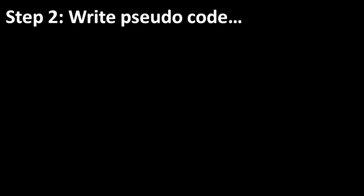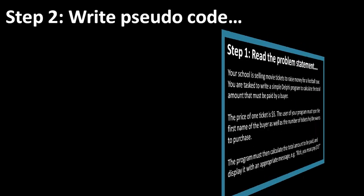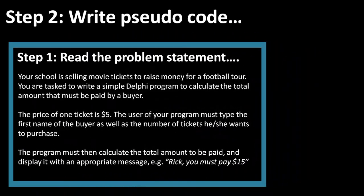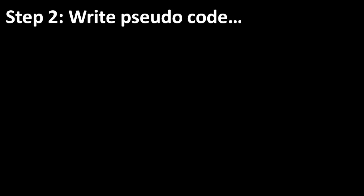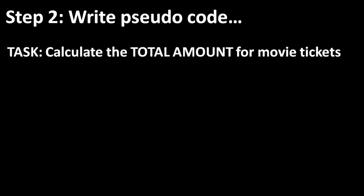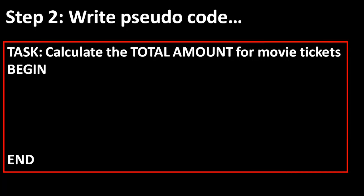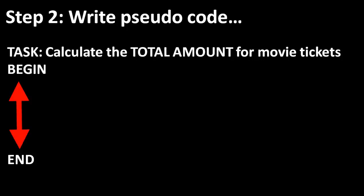You can do it in your own words. First, determine what the program should produce — in other words, what the purpose is. The problem statement tells me that I must write a Delphi program that calculates the total amount that the buyer must pay for movie tickets. That is the main task or procedure of the application. In zero code, I will write down: task — calculate the total amount for movie tickets. And just like procedures in Delphi, I write the begin and end statements. All the instructions that relate to this main task will go between the begin and end statements.